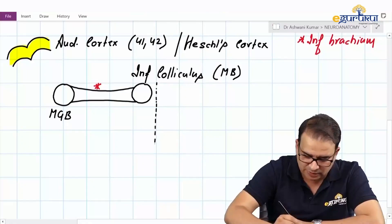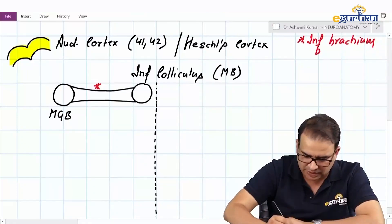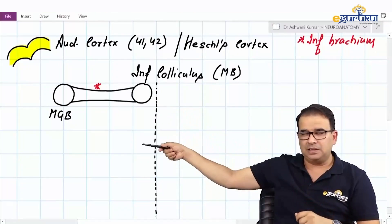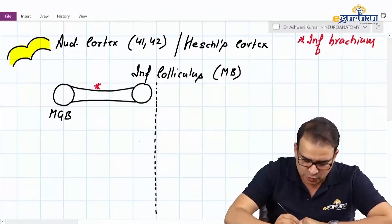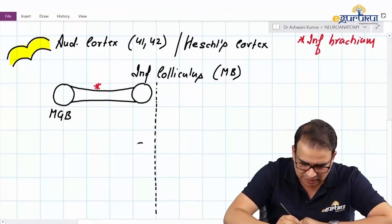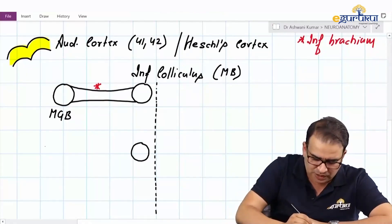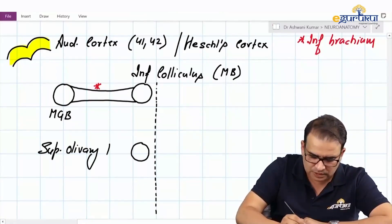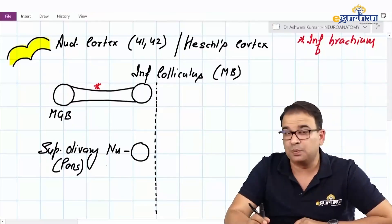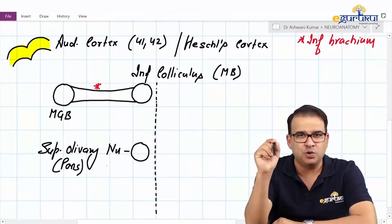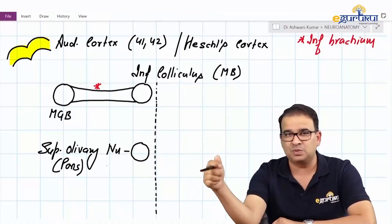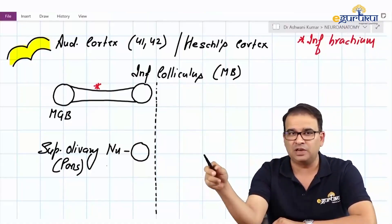Considering the midbrain and moving below, we go to the pons. There is a nucleus present in the pons which has a relation to the auditory pathway and we call it the superior olivary nucleus. Remember: the inferior olivary nucleus forms the olive and is part of medulla oblongata, whereas the superior olivary nucleus is in the pons.